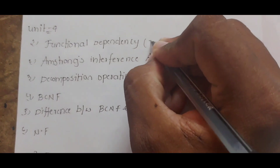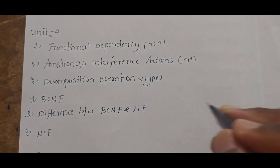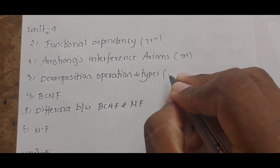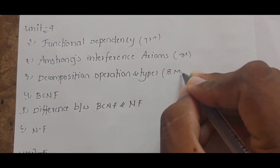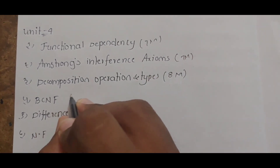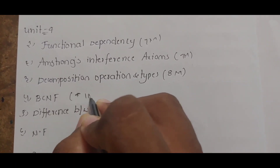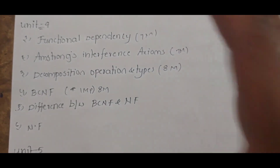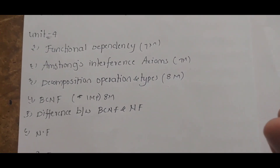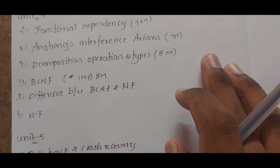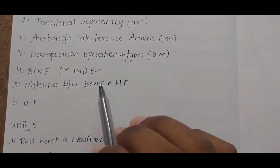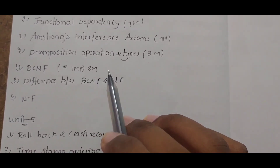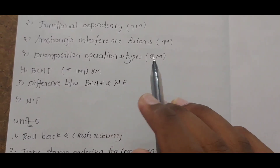Coming back to Unit 4 — it is already explained in the R19 video. The link to the R19 video is in the description. The most important topics are BCNF and the differences between BCNF and normal forms. Focus only on the differences because those answers cover both BCNF and normal form answers.